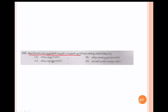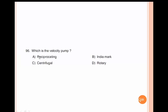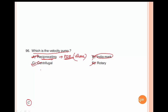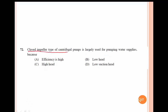If you put a booster pump in the distribution line, the answer is A. Which is the velocity pump? The closed impeller type of centrifugal pump is rarely used for pumping water supplies because of high head, not low head or low suction.